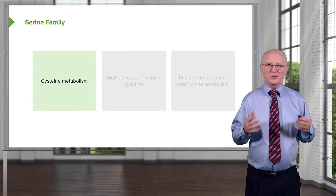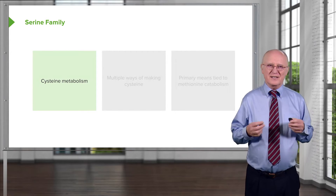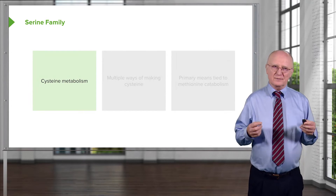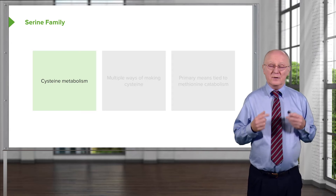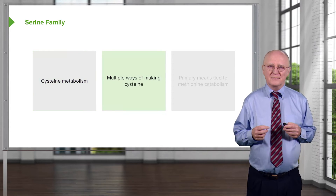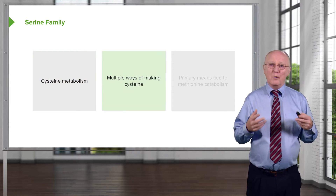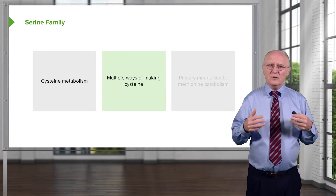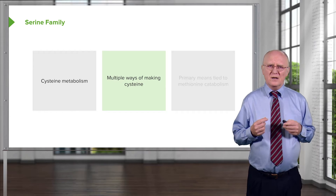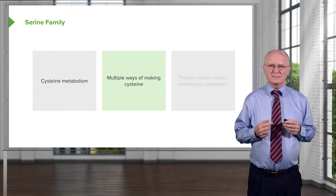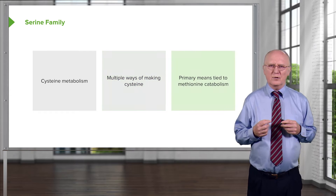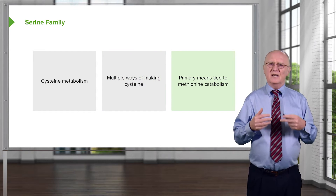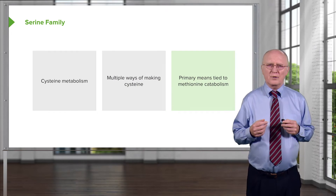The next amino acid in the serine family to consider is cysteine. Cysteine is one of only two amino acids that contains a sulfur, so incorporating sulfur into the serine backbone is central to making it. Cysteine can be made in multiple ways, which indicates both interconnection with many metabolic processes and the importance of this amino acid for making proteins. The primary means of making cysteine is tied to methionine metabolism.